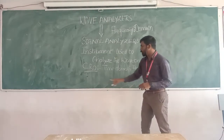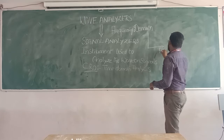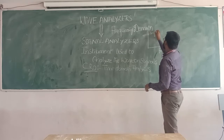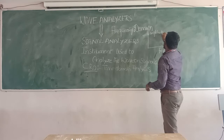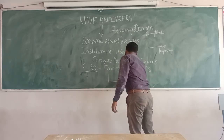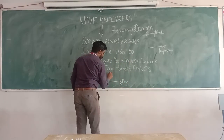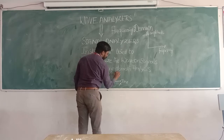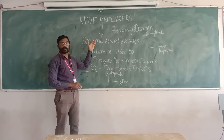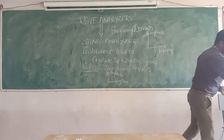In a wave analyzer or spectrum analyzer, the x-axis is frequency and the y-axis is amplitude. Whereas in the CRO, the x-axis is time and the y-axis is amplitude. So the key difference is: CRO operates in the time domain, and wave analyzers operate in the frequency domain.